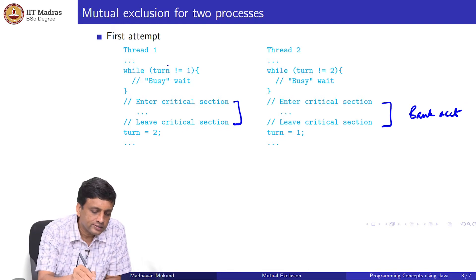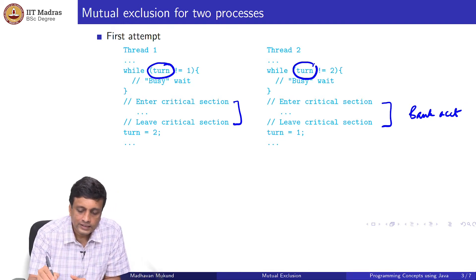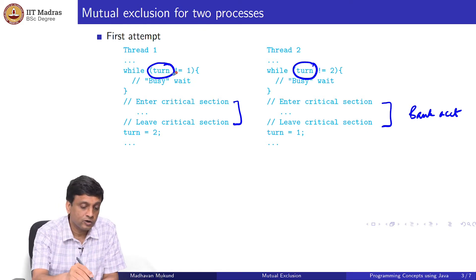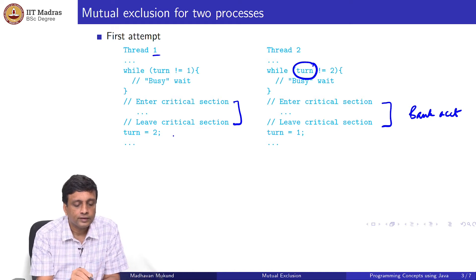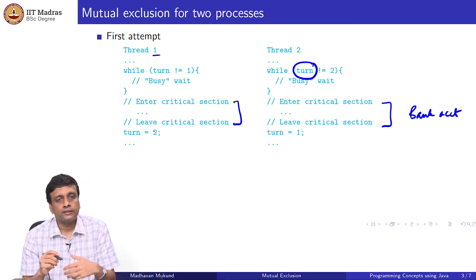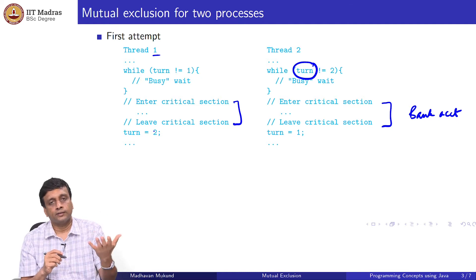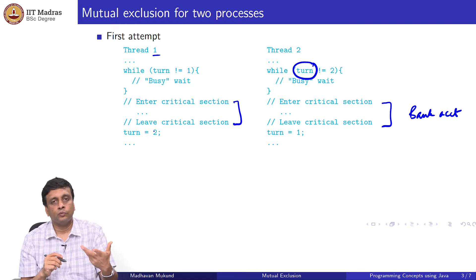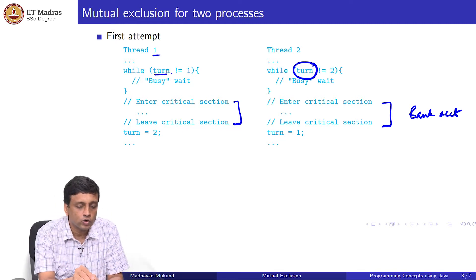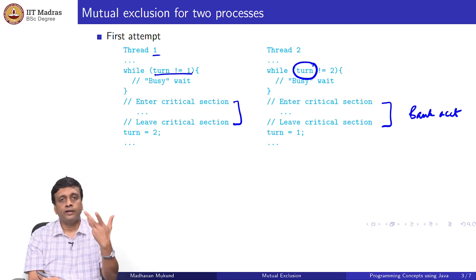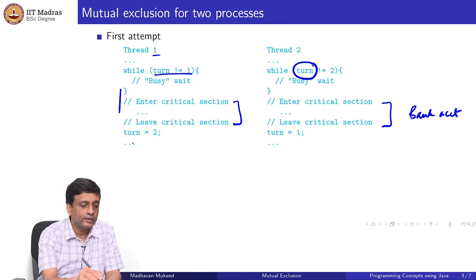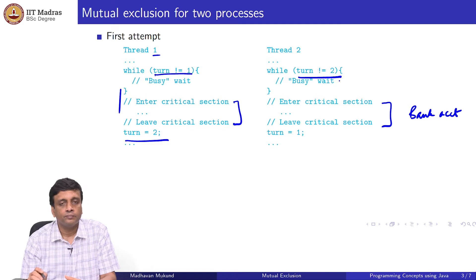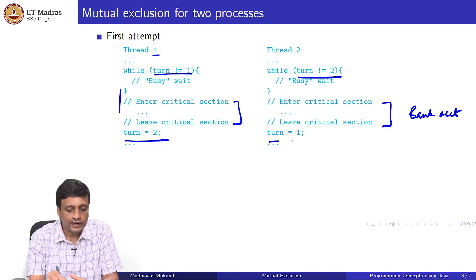What is happening in this protocol is that each thread tries to be nice to the other thread — it is trying to say it is your turn. So if it is the turn of thread one, then turn will be one. As long as it is not one, thread one will wait. When turn becomes one, it will execute, and then it will hand over to the other thread. Symmetrically, thread two will wait for its turn, and when it is done, it will hand over the turn to the other thread.